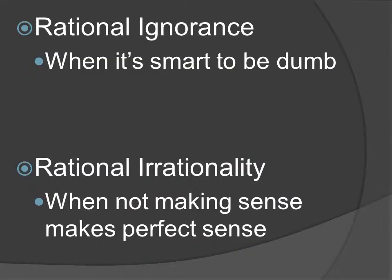The theories of rational ignorance and rational irrationality both explain how behaviors that seemingly stem from being uninformed or illogical can be explained as agents acting rationally to further their own self-interest. The scarcity of time and information forces people to make trade-offs. When the personal cost of being uninformed or irrational about a topic is low, people will invest their mental energies elsewhere — not because they're stupid, but because doing so is the best use of their limited time and energy. So, sometimes it's smart to be dumb, and it makes sense not to make sense.